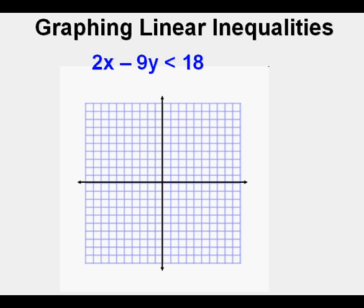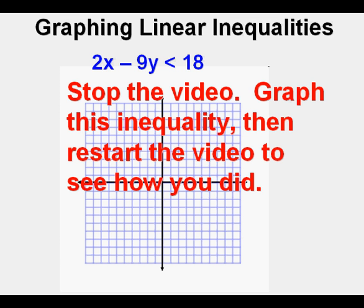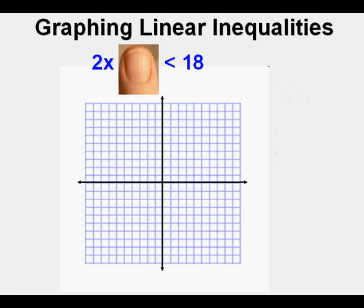Let's graph this inequality: 2x minus 9y is less than 18. For purposes of graphing, think of it as 2x minus 9y is not equal to but less than 18. Stop the video and try this on graph paper; restart when finished. First, solve for the x-intercept by covering the y term, leaving 2x is less than 18. Dividing by 2 gives x-intercept of 9. Mark that on the x-axis at 9.